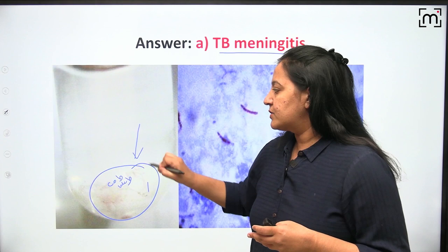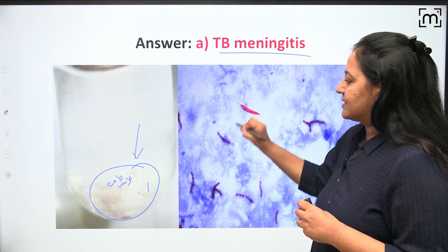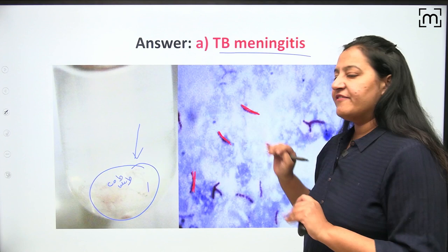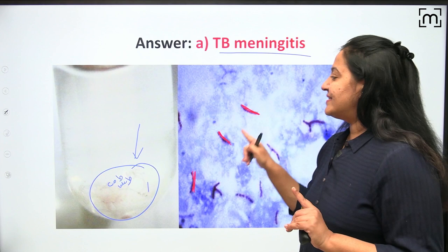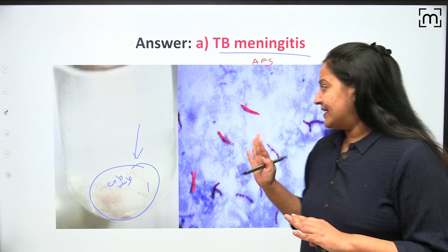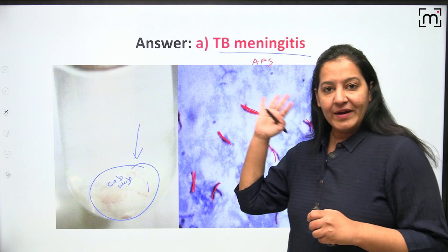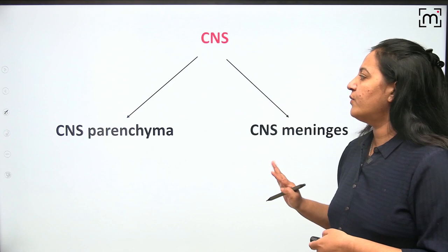In the microscopic picture, you can see elongated organisms — these are bacilli. The stain here is not gram stain; you can see red color bacilli on a blue necrotic background. This is acid-fast stain. In acid-fast staining you can see typical Mycobacterium tuberculosis bacteria present in the form of rods on a blue necrotic background.